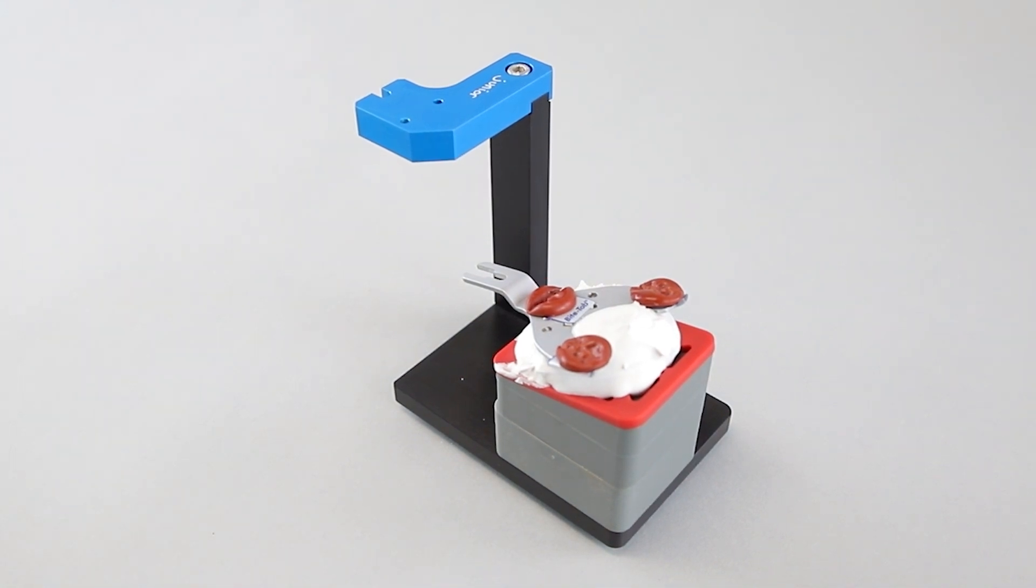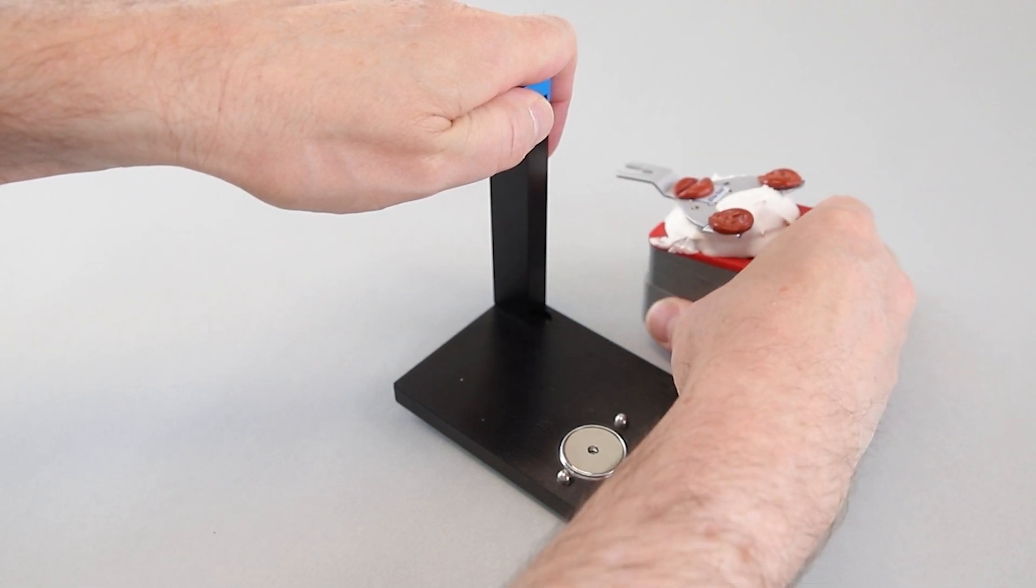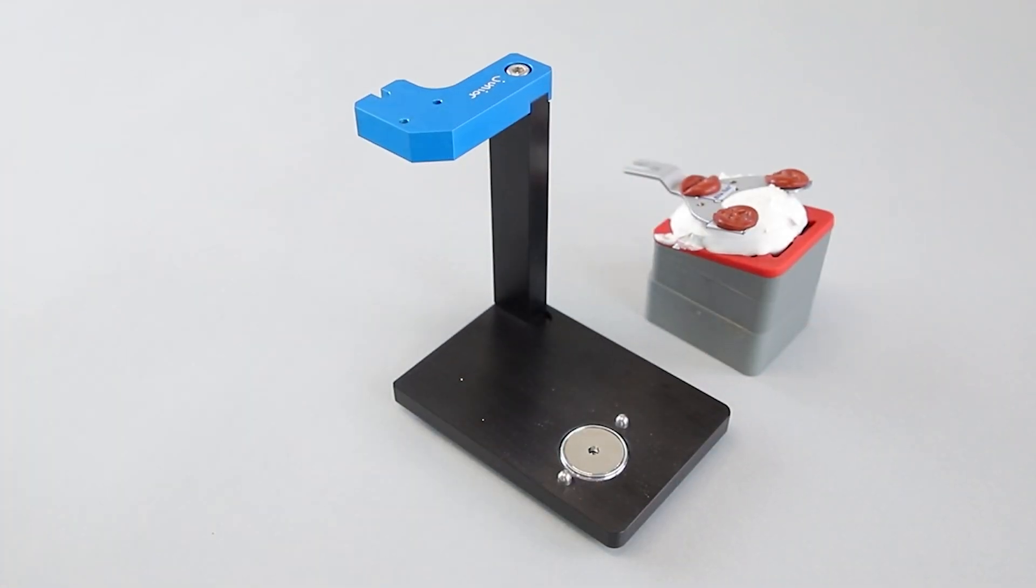Take out the bite fork with the transfer table from the Transfer Stand AB Jr. Now you can fix the bite fork into the Reference SL Articulator to articulate the upper cast.